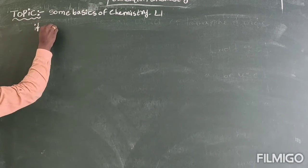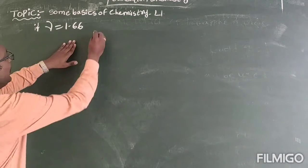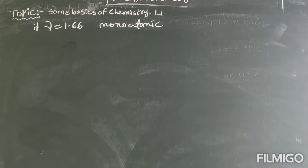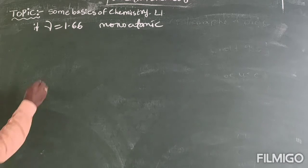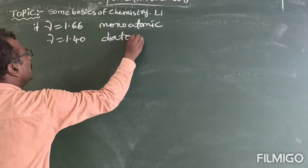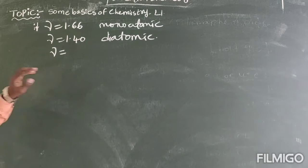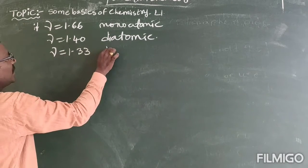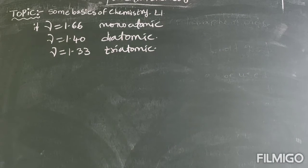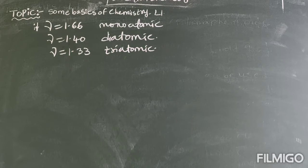If gamma equals 1.66, then it is monoatomic. If gamma is 1.40, then it is diatomic. If gamma is 1.33, then it is triatomic. This technique is used to identify whether a substance is monoatomic, diatomic, or triatomic from its specific heat capacity ratio.